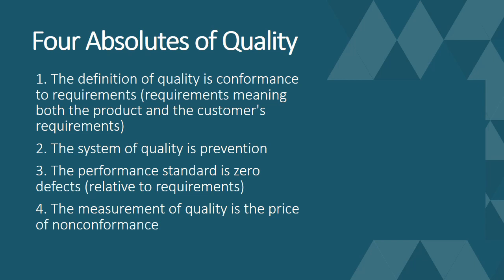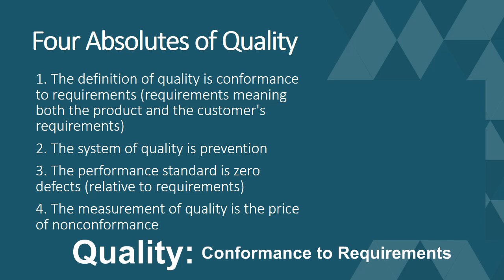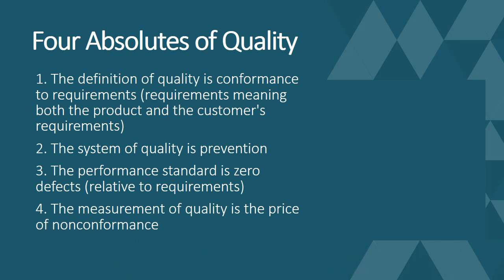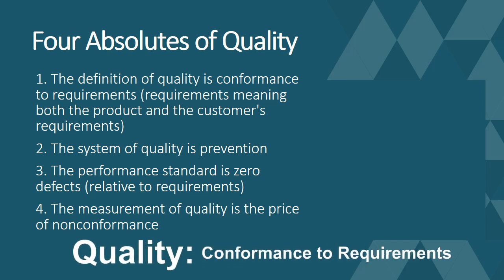Here we have four absolutes of quality defined by Philip Crosby. The first one is that the definition of quality is conformance to requirements. Crosby was of the opinion that quality is conforming to specification limits. The design group will set the specification and the production group will make products within those specifications. This is something which is measurable and people can work towards achieving.